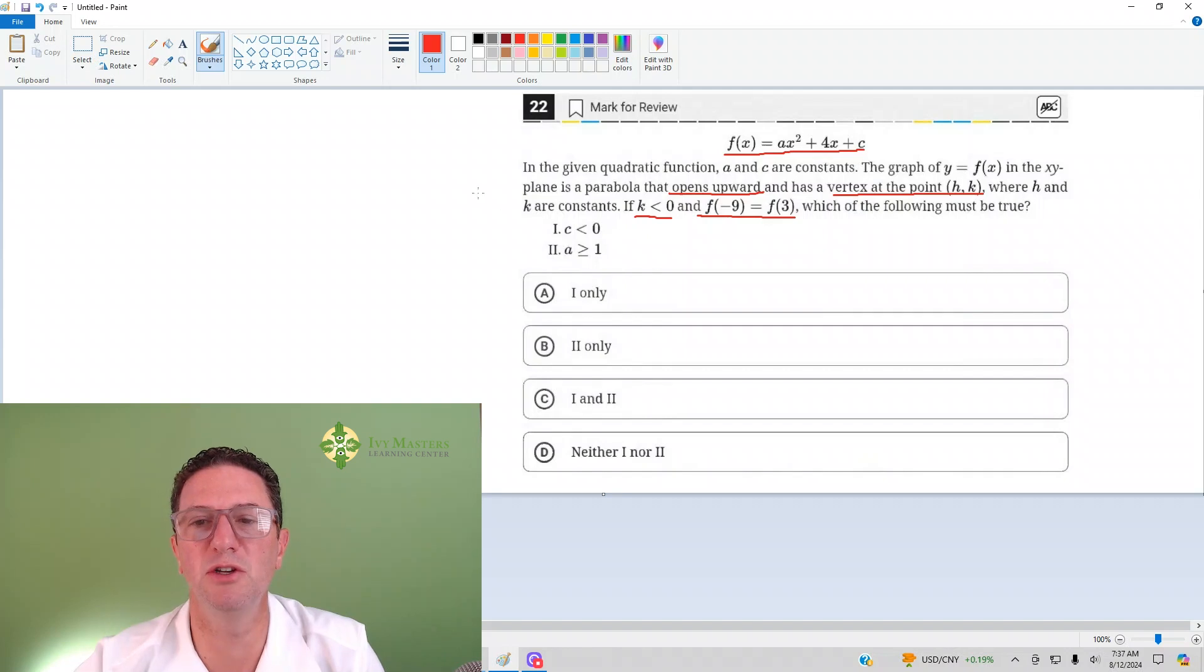One thing is understanding what f(-9) = f(3) means. Whether your x is negative nine or your x is three, the y values are equal because f(x) is y. So when x is -9 or x is 3, your y values are equal, and the only time that's true in a parabola is under specific conditions.